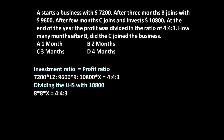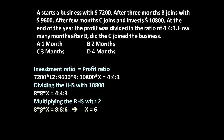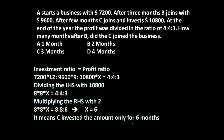After dividing by 10800, the equation becomes 8 : 8 : x = 4 : 4 : 3. To make both sides equal, let us multiply the right-hand side by 2, so it becomes 8 : 8 : x = 8 : 8 : 6, which means x = 6.